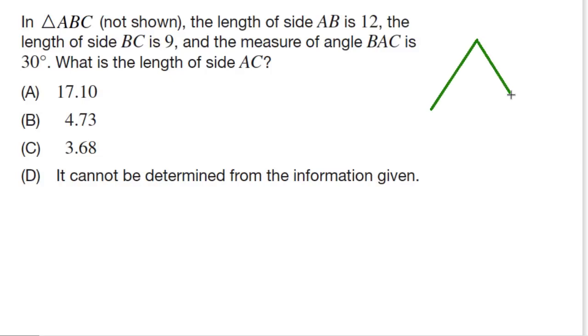In this problem, we're given triangle ABC. We know that the length of AB is 12 and BC is 9, and we know that this angle right here is 30 degrees. We want to know what the third side is.